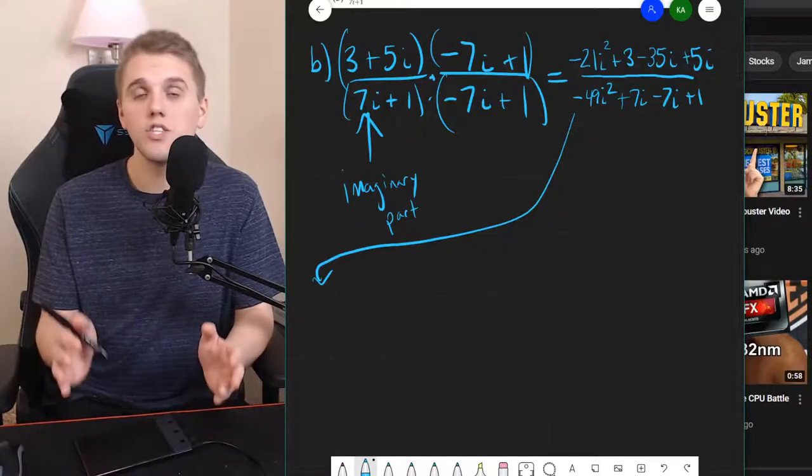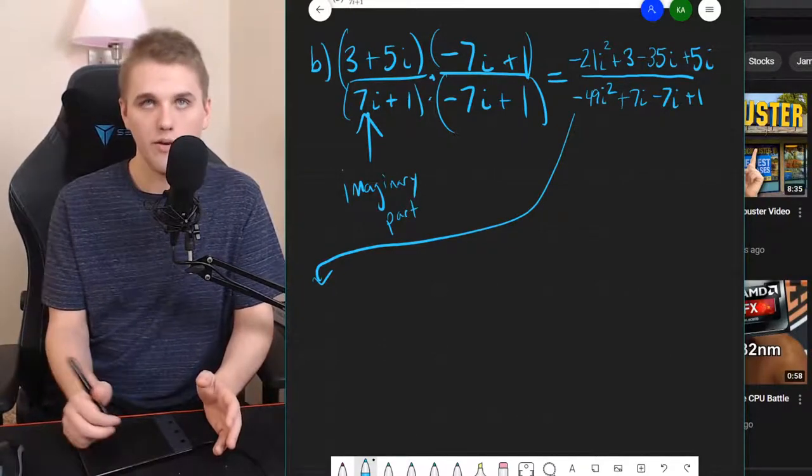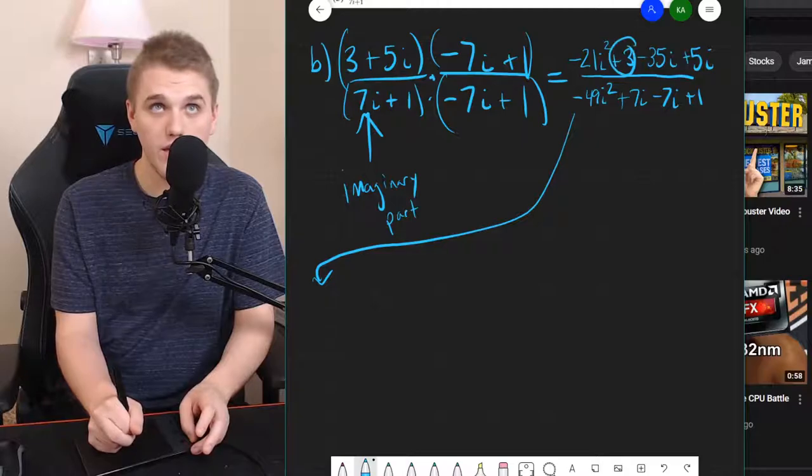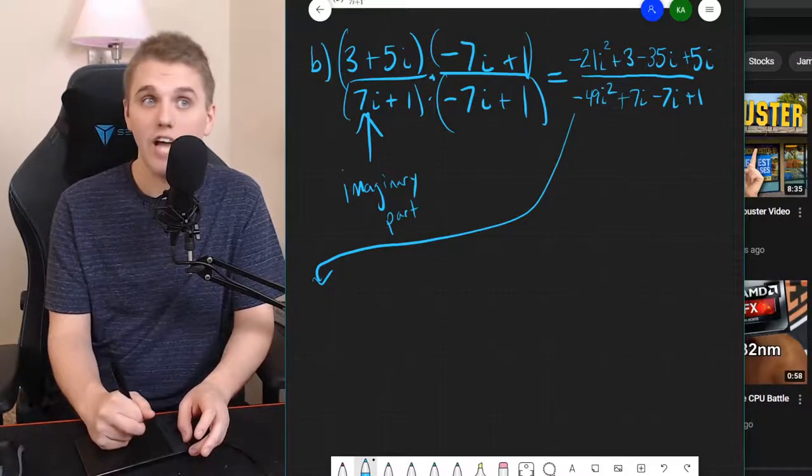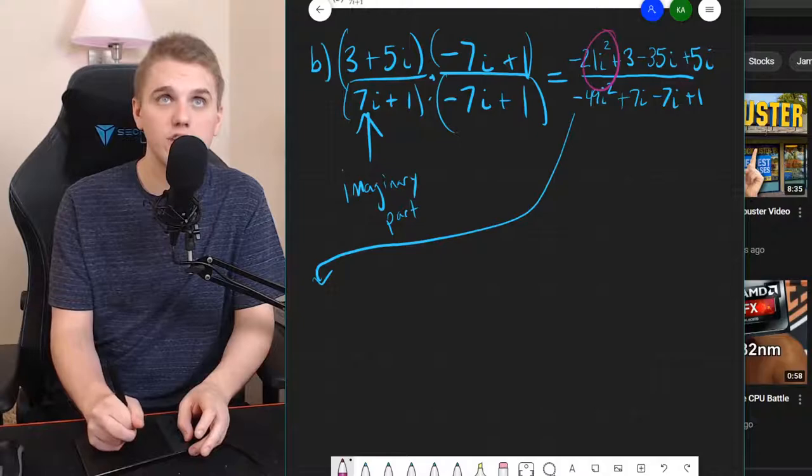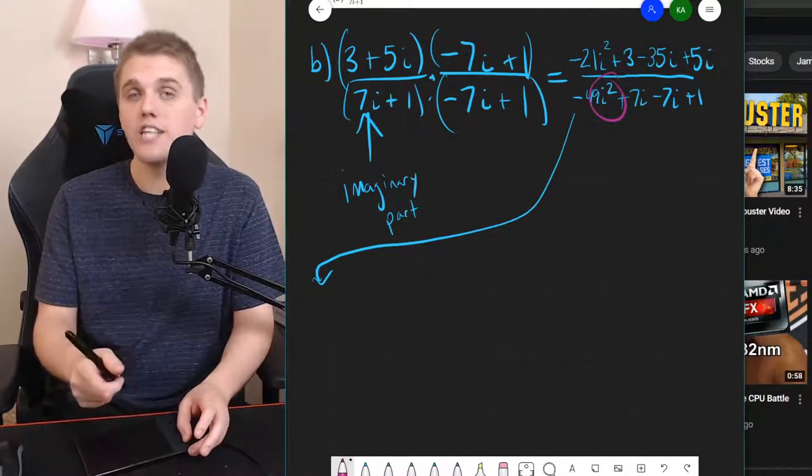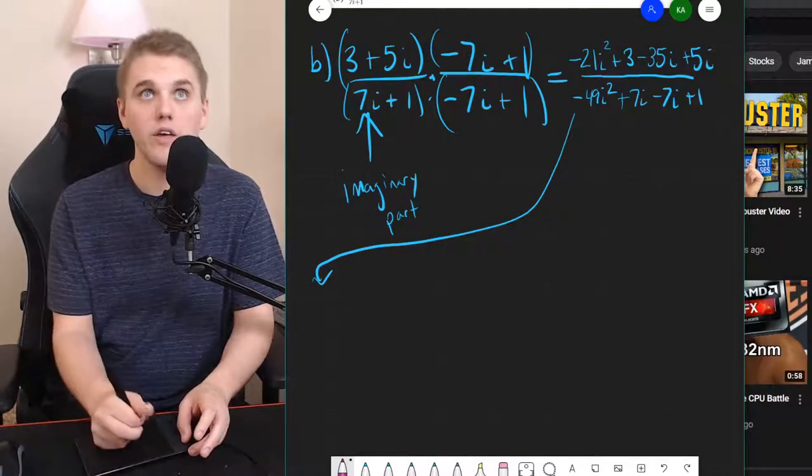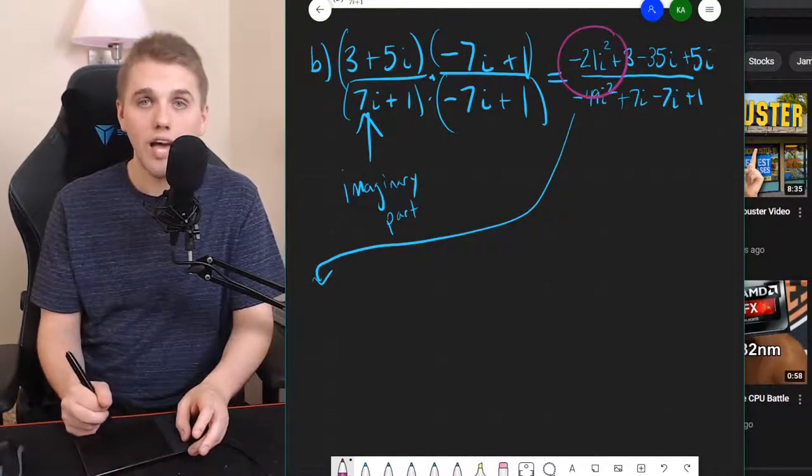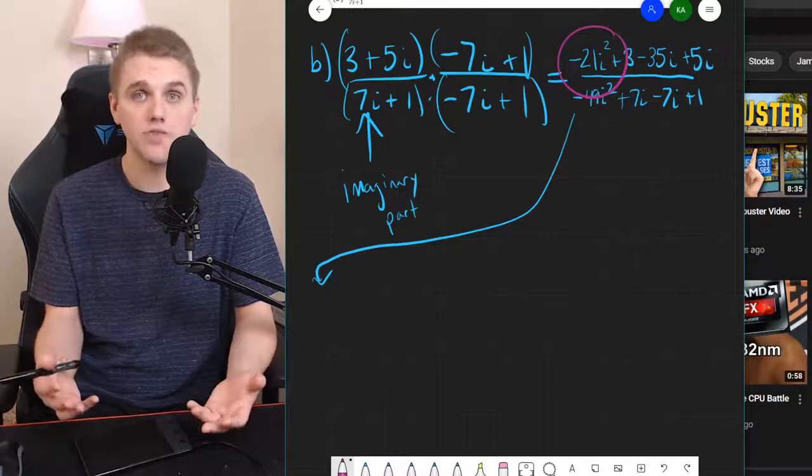So what is the real part in the numerator? Well, I see a 3 here. But I should also mention I notice that there's an i squared here and an i squared there. Keep in mind that i squared is negative 1. So negative 21i squared is just positive 21.